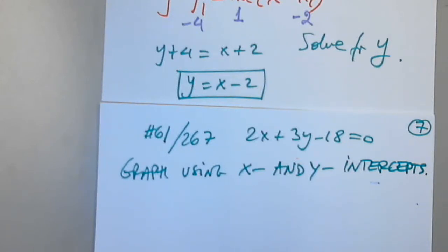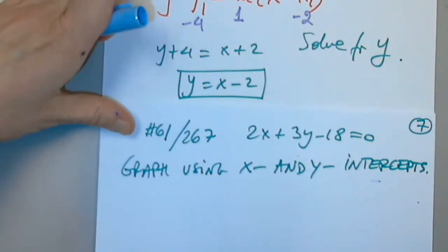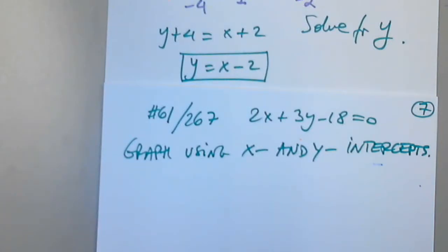Graphing using x and y intercepts. When we try to find the x-intercept, what do we have to do? This is the only function for which we don't determine the domain because it's all real numbers — it will look like this or like this. This is the only one for which we do not need to find the domain.